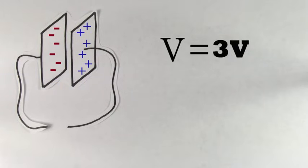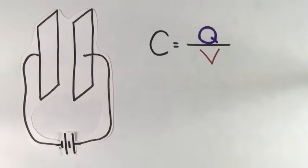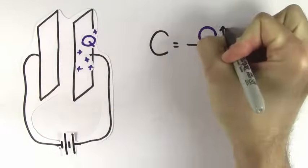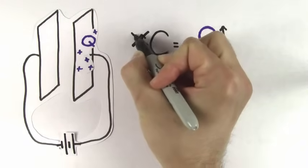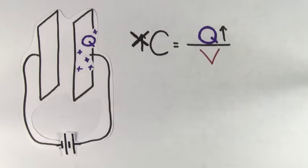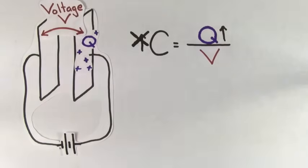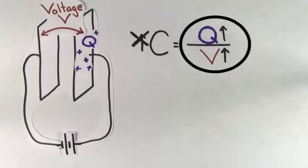You might think that as more charge gets stored on a capacitor, the capacitance must go up. But the value of the capacitance stays the same because as the charge increases, the voltage across that capacitor increases, which causes the ratio to stay the same.